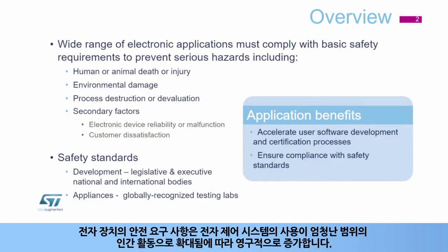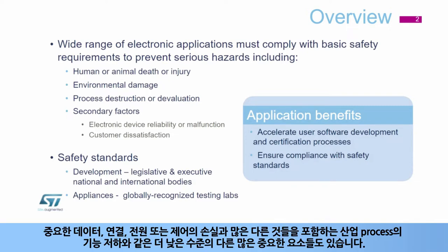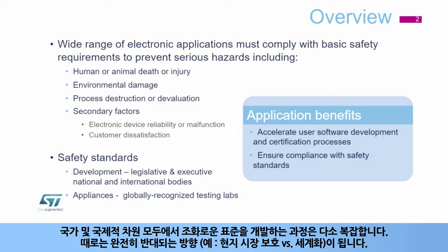Safety requirements for electronic devices increase permanently as the use of electronic control systems expands into a huge range of human activities. The massive expansion of these devices requires their compliance with specific safety standards. The primary goal is to prevent human death or injury as well as environmental damage, but there are many other important factors at a lower level, such as the devaluation of an industrial process including the loss of important data, connections, power or control, and many others. The process for developing harmonized standards at both national and international levels is rather complex, sometimes involving completely opposite efforts such as local market protection versus its globalization.